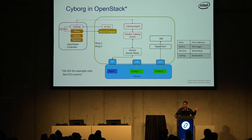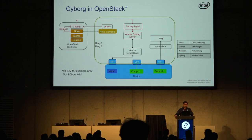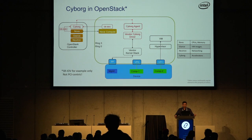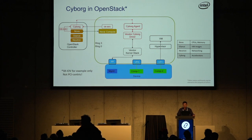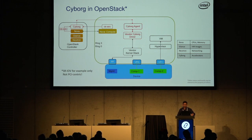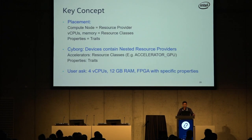Cyborg would return something totally neutral and not Nova-specific for standalone use cases, and os-acc would convert that into a Nova-specific form to be consumed in Nova. Before going into the workflow, we should first look at how we represent devices in OpenStack. We already have the notion of placement in Nova, where we represent compute nodes as resource providers.